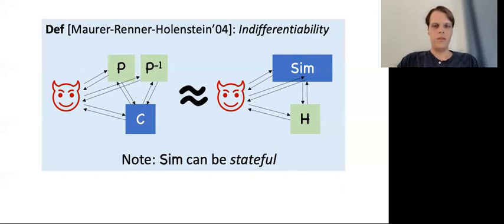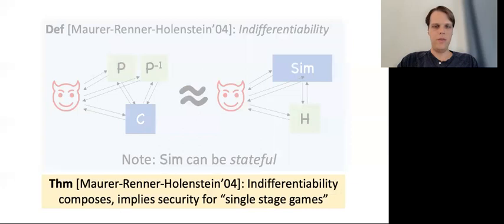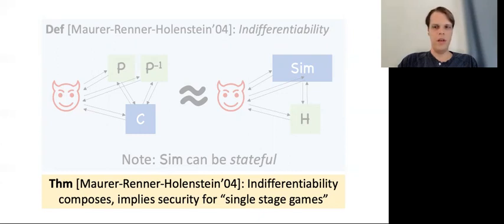Indifferentiability can be seen as a form of universal composability for idealized objects. Maurer et al. show that indifferentiability composes well: if you construct one indifferentiable object from another indifferentiable object, the final object is in fact indifferentiable. They also show that indifferentiability implies security for what are called single-stage games — games making up most of cryptography where a single adversary interacts with a challenger. I will call this result the MRH composition theorem. Because of these nice properties, and because many hash functions are built from lower-level building blocks, proofs of indifferentiability have become popular to justify that a new construction at least doesn't have trivial attacks. Many popular constructions have indifferentiability proofs, such as Merkle-Damgård and the sponge construction.